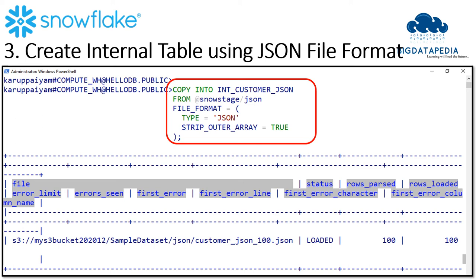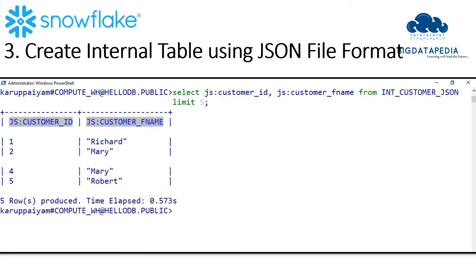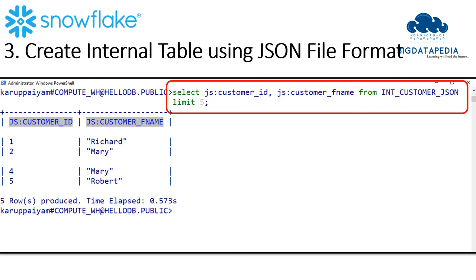Please enable STRIP_OUTER_ARRAY as true if you have multi-line JSON data. Once the data is loaded successfully, we can see the file name in the result tab. Now let me verify some columns from the JSON table using the JSON variant column in the SELECT clause. The column was created with the VARIANT data type, and based on that we can verify the data is reflected properly.